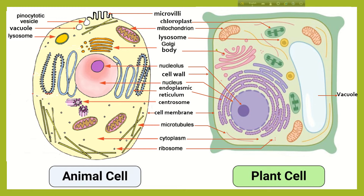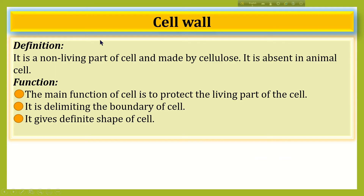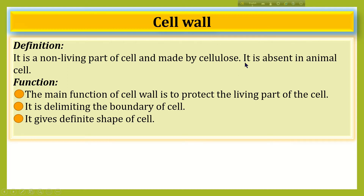Now I am going to discuss some important parts of a plant cell. First, cell wall. It is a non-living part of the cell and is made by cellulose. It is absent in animal cell. The main function of cell wall is to protect the living part of the cell. It delimits the boundary of the cell and gives the cell a definite shape.